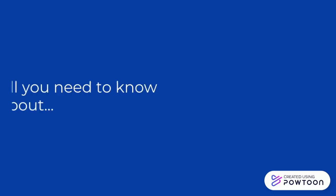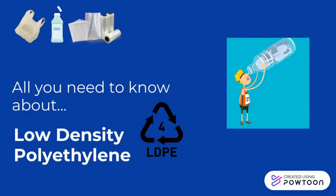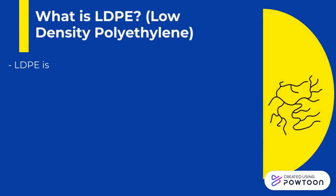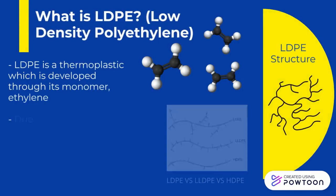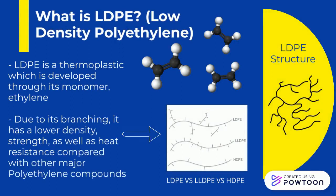In this video, you're going to learn all you need to know about low-density polyethylene, also known as LDPE. LDPE is classified as a thermoplastic, which is developed through its monomer, ethylene. Due to its branching, it has a lower density, strength, as well as heat resistance compared to other major polyethylene compounds, such as linear low-density polyethylene and high-density polyethylene.